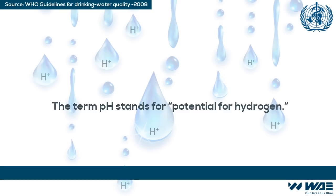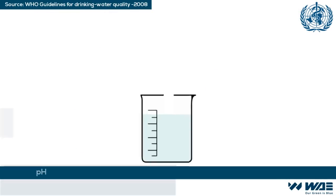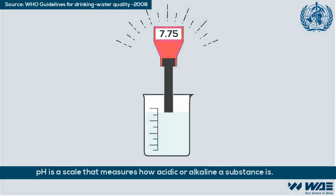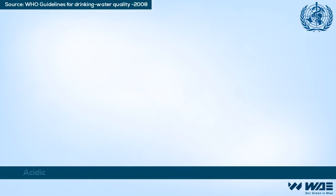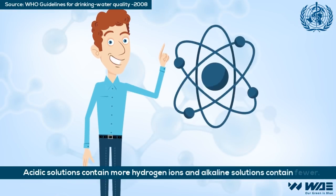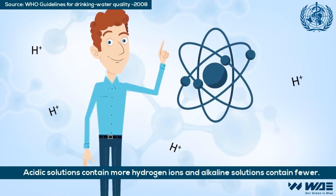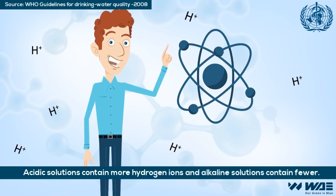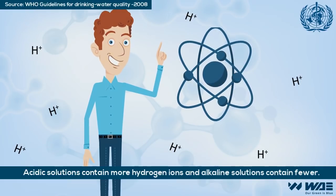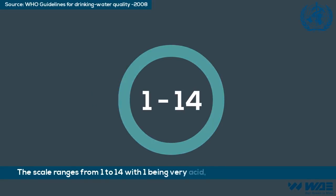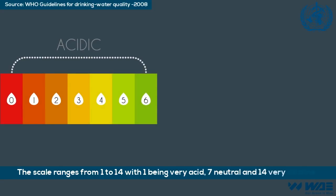The term pH stands for potential for hydrogen. pH is a scale that measures how acidic or alkaline a substance is. Acidic solutions contain more hydrogen ions and alkaline solutions contain fewer. The scale ranges from 1 to 14, with 1 being very acidic, 7 neutral, and 14 very alkaline.